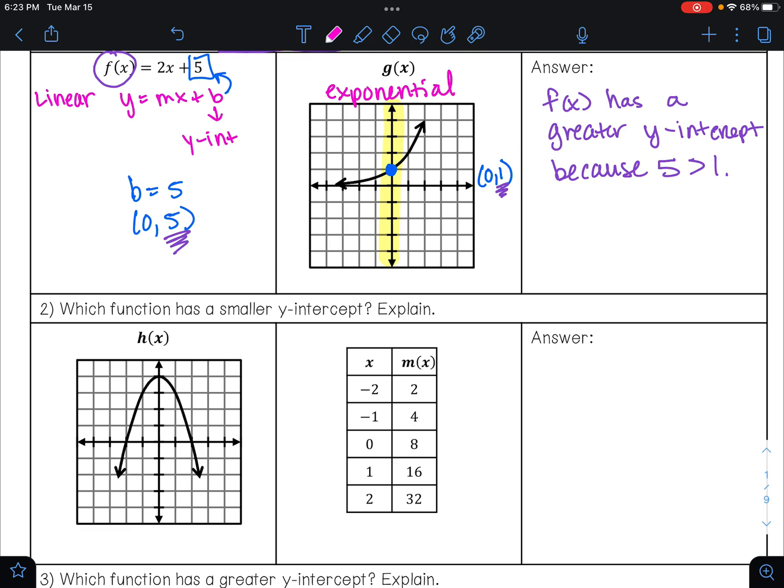On h(x), we're given a graph. This is a graph of a parabola. I know that because it has that u-shape. And my y-intercept is going to be where my parabola crosses my y-axis. That is happening at this point right here. And this is at the point, let's see, this is 0, 1, 2, 3, 4. So this is the point (0, 4).